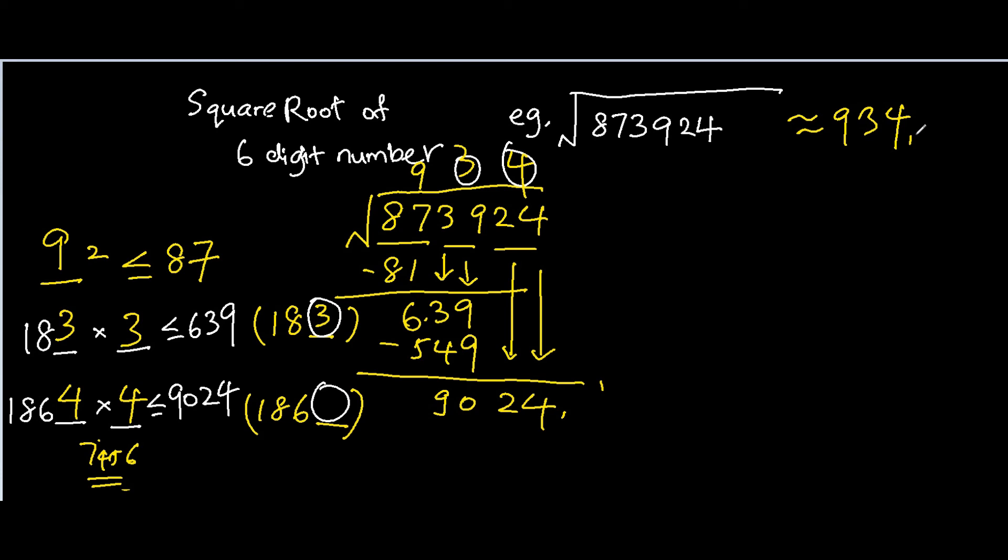You do not need to go through the decimal point, even though you can. The idea of this whole video is just to find the estimated value of the square root of a 6-digit number. I do hope that you guys understand the whole process of how to go about doing it. That's it for today, I'm Bob — thank you guys for watching, and I will see you in the next video.